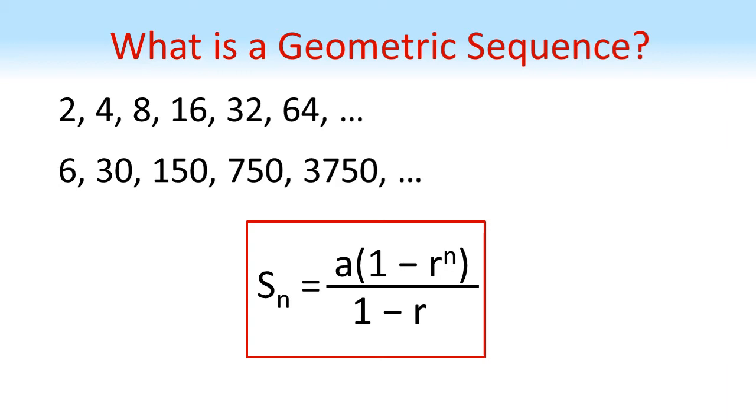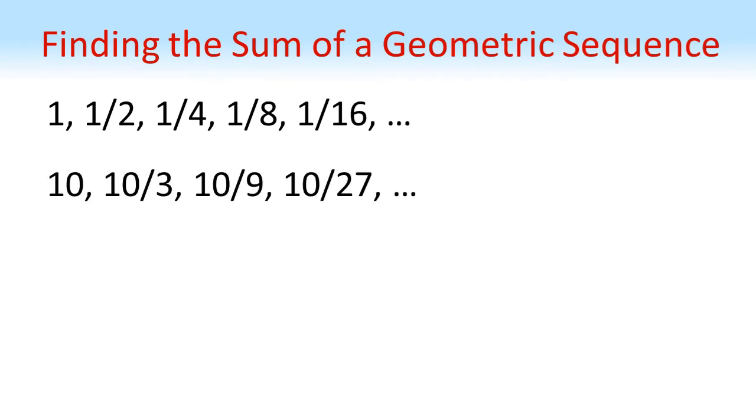Check out my video on summing geometric sequences to find out how this is derived. If we have a common ratio between minus 1 and 1, then our terms will get closer and closer to 0, as in the two sequences here.